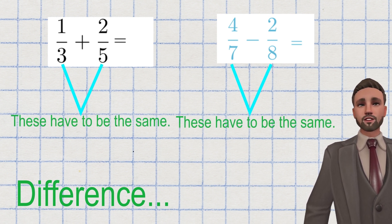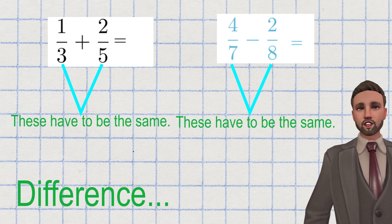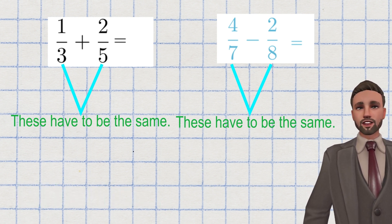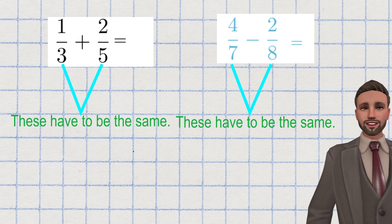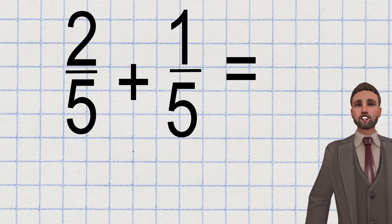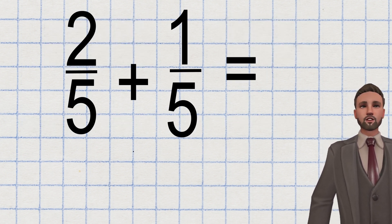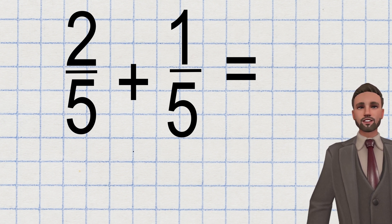If you have the same denominator, then you're on to a winner. The question is easy. You literally just add or subtract the numerators depending what the question is asking. Questions like two fifths add one fifth. You literally are just adding the parts. Two parts add one part makes three parts,